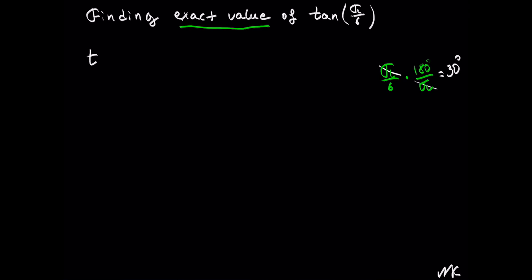So finding the exact value of tan(π/6) is exactly the same problem as finding the exact value of tan(30°). If you have the values memorized, you can say that tan(30°) = √3/3. But if you're not sure, it's very easy to use a reference table.